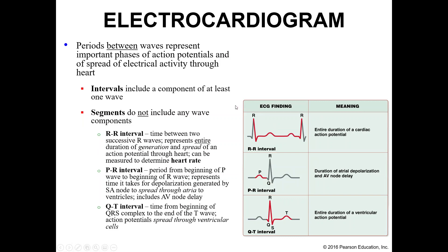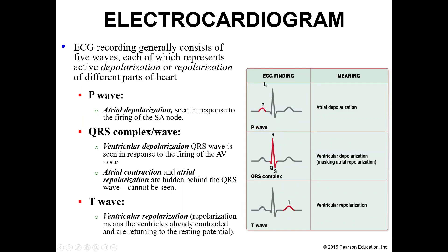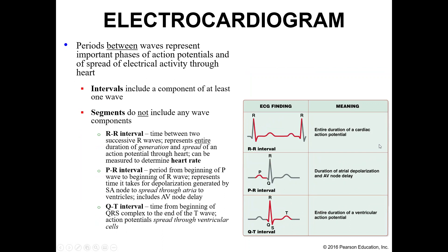Since EKGs measure electrical activity over a certain period of time, you're not going to see just one of these cycles — you'll have consecutive ones. We can also use intervals to determine if your heart is functioning as it should. Intervals include at least one component of a wave, while segments do not include any wave components.